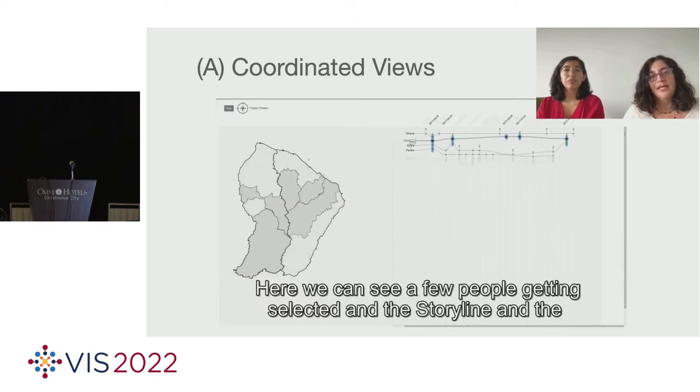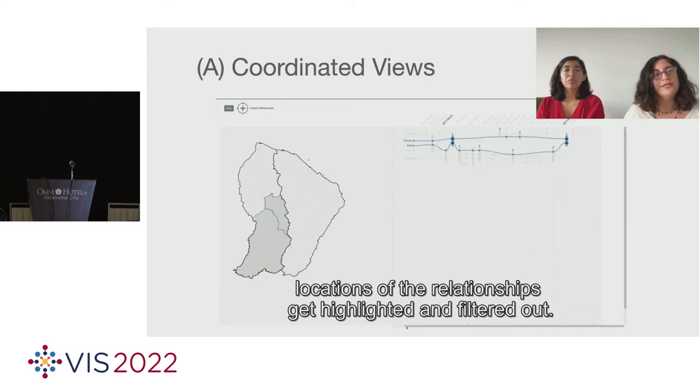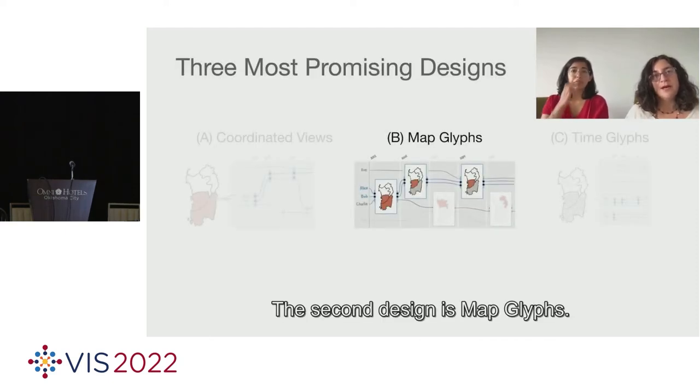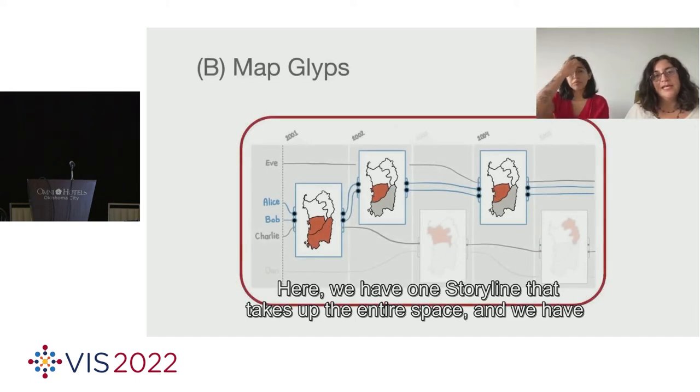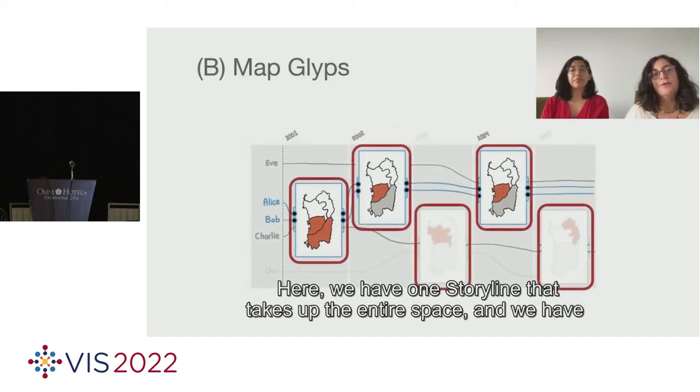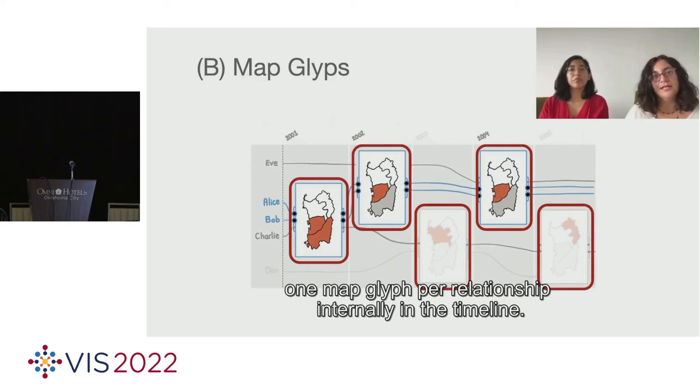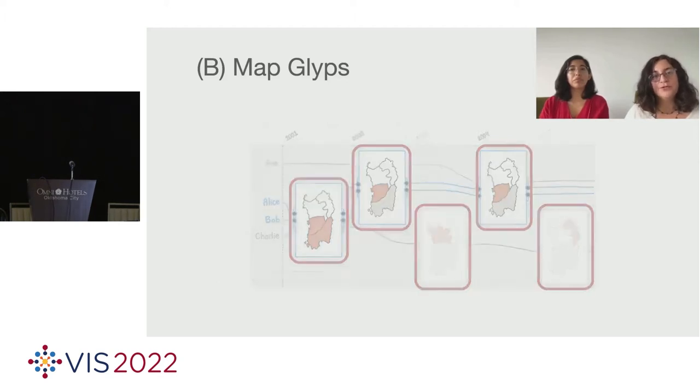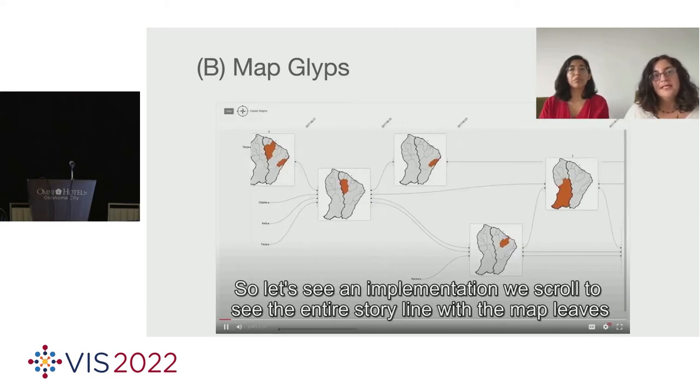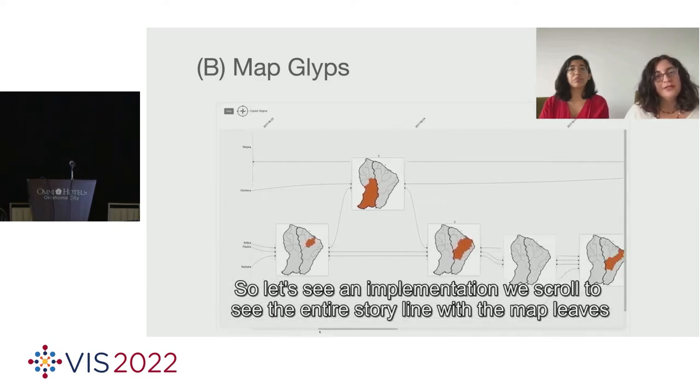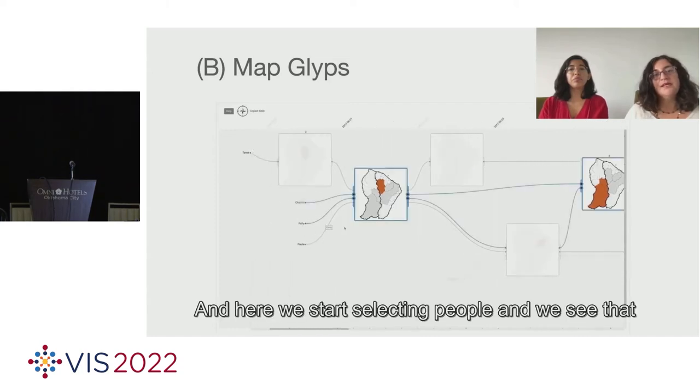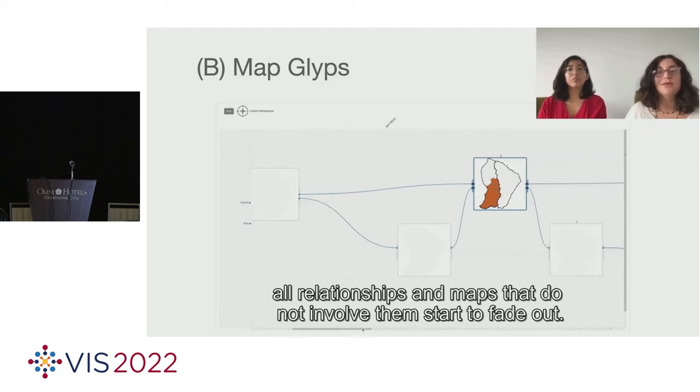Here we can see a few people getting selected, and the storyline and the locations of the relationships get highlighted and filtered out. The second design is Map Glyphs. Here we have one storyline that takes up the entire space, and we have one map glyph per relationship internally in the timeline. The locations associated with that relationship are highlighted in the mini-maps with orange. We scroll to see the entire storyline with the map glyphs. And here we start selecting people, and we see that all relationships and maps that do not involve them start to fade out.